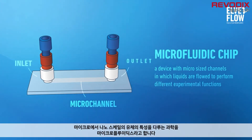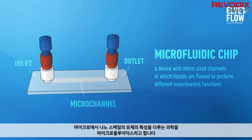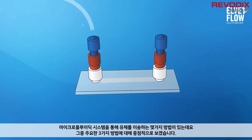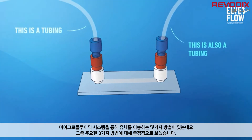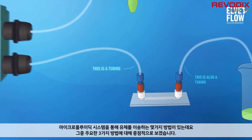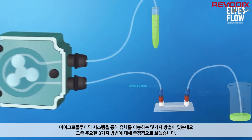The science of manipulating and controlling fluids at the micro to nanometer scale is called microfluidics. There are several ways to move liquids through a microfluidic system. Let's focus on the main three.